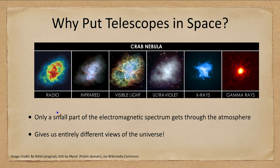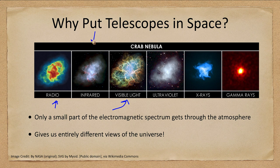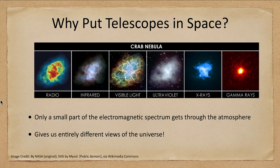We get a completely different view of the universe by observing in other wavelengths. For example, here is the Crab Nebula — in the middle is visible light, and we see the radio image as well. But looking at things in infrared, ultraviolet, X-ray, and gamma ray gives us a complete picture of the object. Any one wavelength alone is not bad, just incomplete, because we're looking at only a tiny portion of the electromagnetic spectrum.